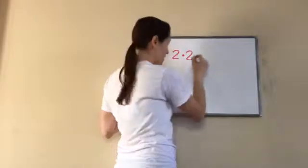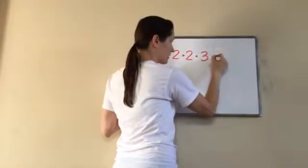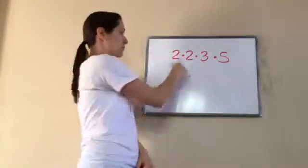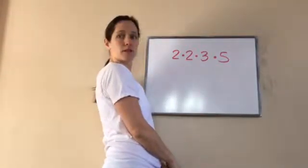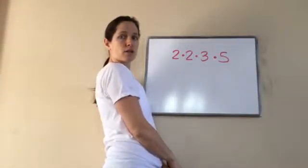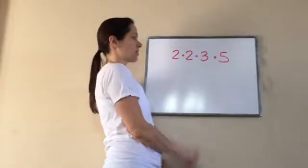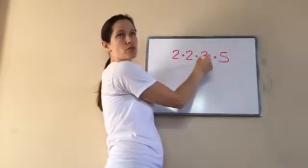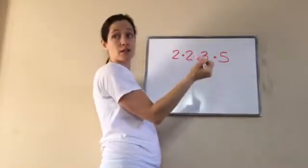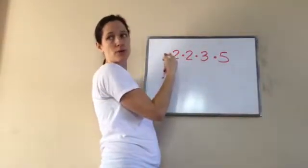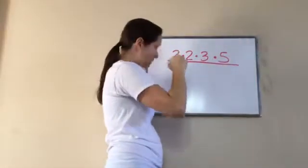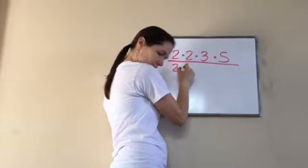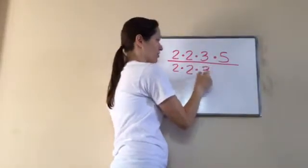Write down: 2 times 2 times 3 times 5. I'm using a little dot in the middle to mean multiply — you'll have to write it differently eventually. This entire problem can't really be done mentally. I mean, you could go 2 times 2 is 4, 4 times 3 is 12, 12 times 5 is 60. But draw a line and write 2 times 2 times 3 underneath.